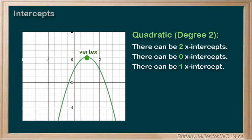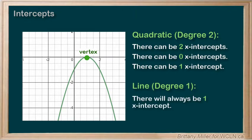So a function of degree 1 has one x-intercept, and a function of degree 2 has 0, 1, or 2.